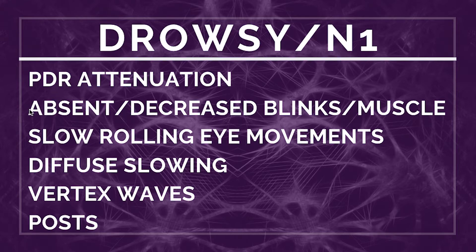The second finding is pretty obvious: if you're getting drowsy you move less, so there's less muscle artifact, and you blink less because your eyes are closed. The third finding is slow rolling eye movements, meaning slow horizontal movement of the eyes — going left to right in a slow fashion — and there's a way to pick this up on the EEG.